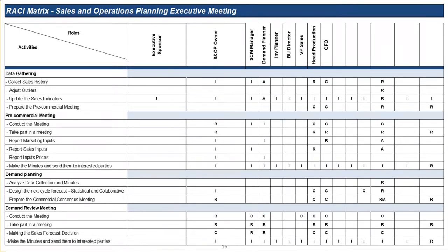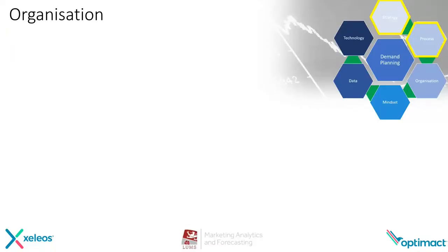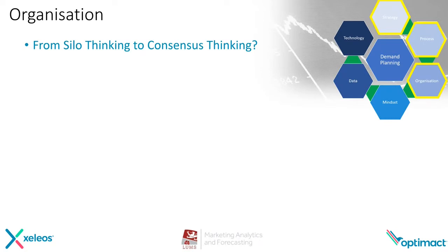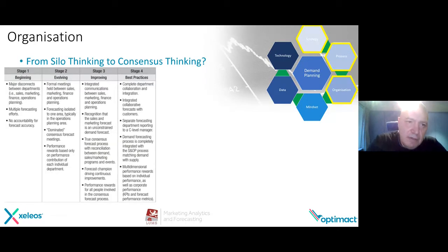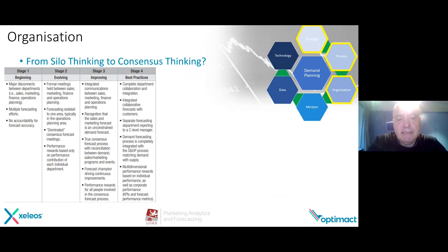By doing this, this is the bridge for your organization. If we talk about organization, what we have seen in recent years — as a kind of maturity — is that companies have to move from silo thinking to consensus thinking. This is really a maturity model, and certain companies are already at stage one or stage two. But if you talk about an efficient demand planning process and really giving value to your supply chain, then you have to move to stage four. And of course, this will also have an impact on the technology.